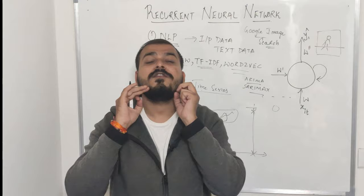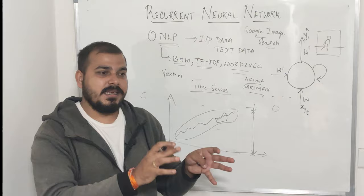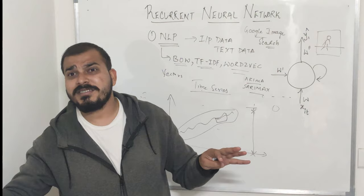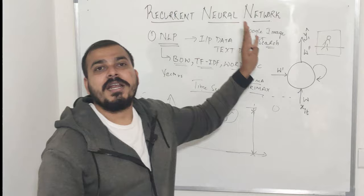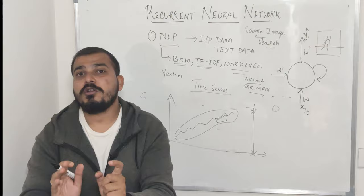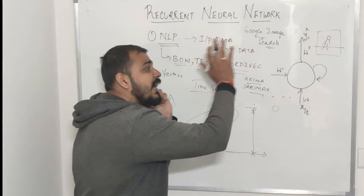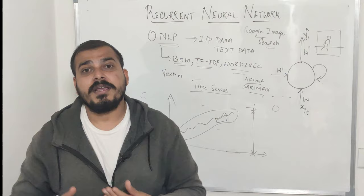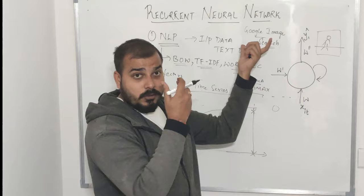Google Translate is another fundamental application. I'll be discussing various types of RNN - something called many-to-many RNN. In Google Translate, suppose you want to convert anything from English to French or English to Spanish - as you write sentences, the words automatically get converted into Spanish, making sure that the sequence information is kept intact. Recurrent neural networks are heavily used for sequence information in input data. Some applications covered: Google image search, image captioning, and Google Translate.